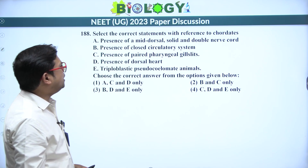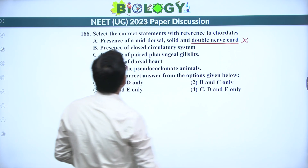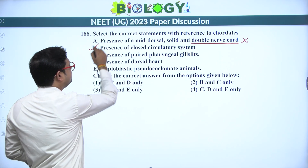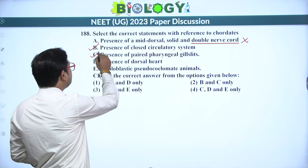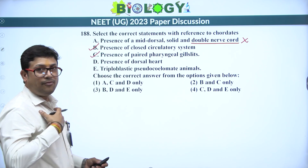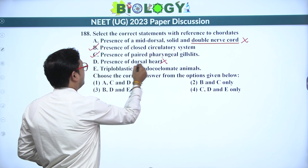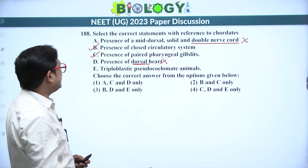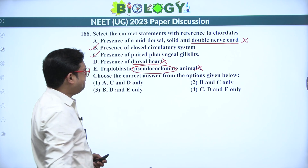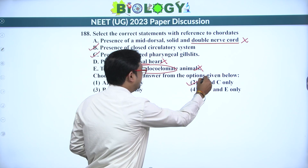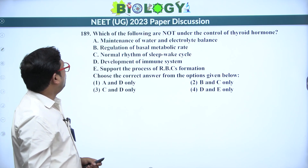Next: correct statements regarding chordates. Presence of mid-dorsal solid and double ventral nerve cord — we have a single nerve cord, so wrong. Presence of closed circulatory system — true. Presence of paired pharyngeal gill slits at least in the embryonic condition — true. Presence of ventral heart, not dorsal — true. Triploblastic and eucoelomate, not pseudocoelomate. So B and C are correct — answer is 2.